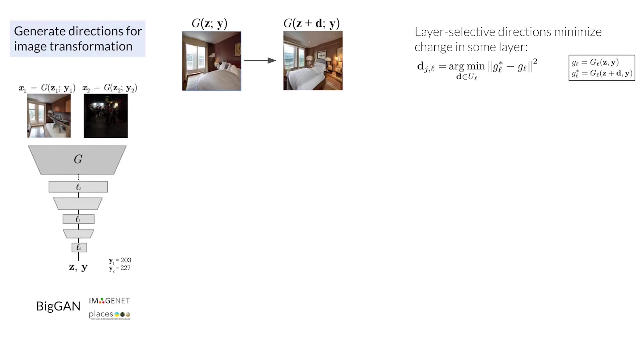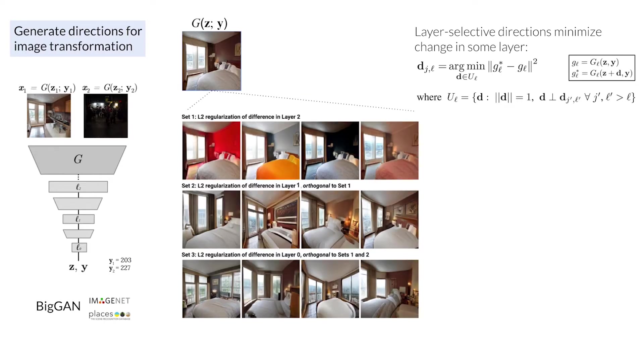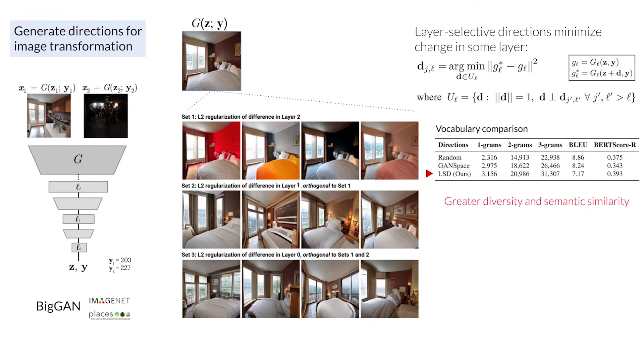These directions have two key characteristics. First, they minimize change in the GAN's feature representation at some layer L, producing specific changes in the image. And second, they are constrained to be orthogonal to directions selected for other layers, to capture changes at multiple levels of abstraction. While the rest of our method can extract primitive visual concepts from any corpus of direction annotations, using layer-selective directions produces a more diverse vocabulary with greater semantic similarity across annotators than using either random directions or principal components of the model's feature space.